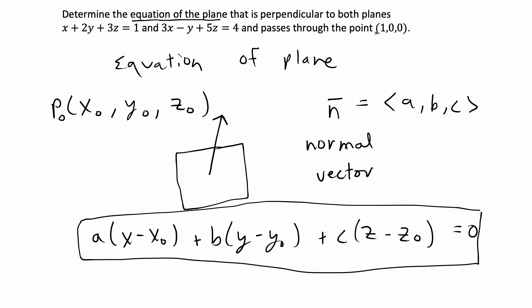In the problem we're given that x0, y0, and z0 are 1, 0, 0. So we know that the point coordinate P0 is (1, 0, 0). So all we have left to find are the coordinates A, B, C which come from the normal vector, and we're given that we need to find a plane that is perpendicular to two planes which we are given the equations for.